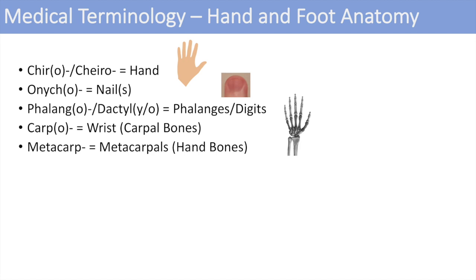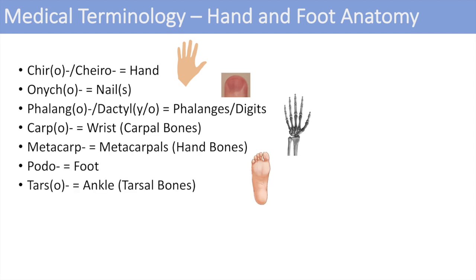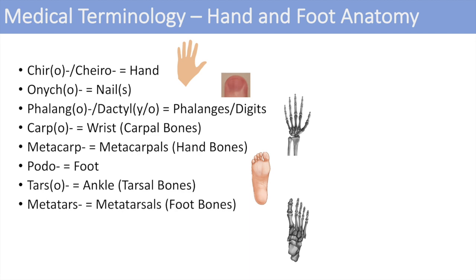Now moving on to the foot. The foot is actually denoted by the prefix podo, and another one is pedi. For pedi you can think of pedicure; for podo you can think of podiatry or podiatrists — these all relate to the foot. The next one is tars or tarsal, which denotes the ankle and more specifically the tarsal bones. The next one is metatars, which denotes the metatarsals — the foot bones. And the last one is calcaneo, which denotes the calcaneus or the heel bone.